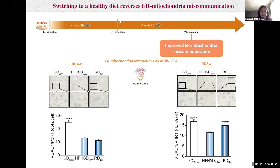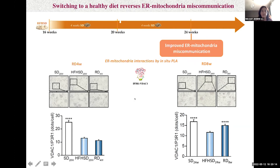We then analyzed ER-mitochondria interactions after these two reversal diet periods. We confirmed the reduction of organelle interaction after 20 or 24 weeks of high-fat, high-sucrose diet feeding. We did not observe an improvement of ER-mitochondria miscommunication after the short reversal diet. However, the eight-week reversal diet induced a significant improvement of ER-mitochondria interactions concomitantly with the improvement of hepatic insulin sensitivity. Therefore, ER-mitochondria miscommunication is an early event during diet-induced obesity, which can be improved by switching mice to a reversal diet concomitantly with hepatic insulin sensitivity.